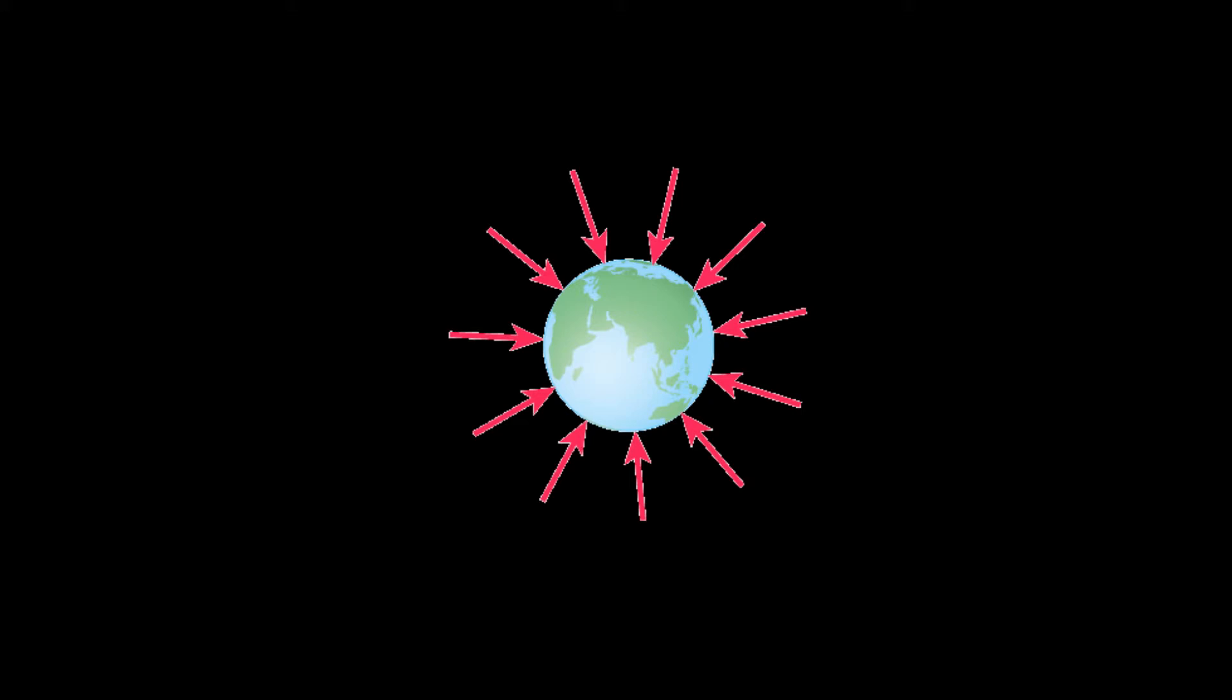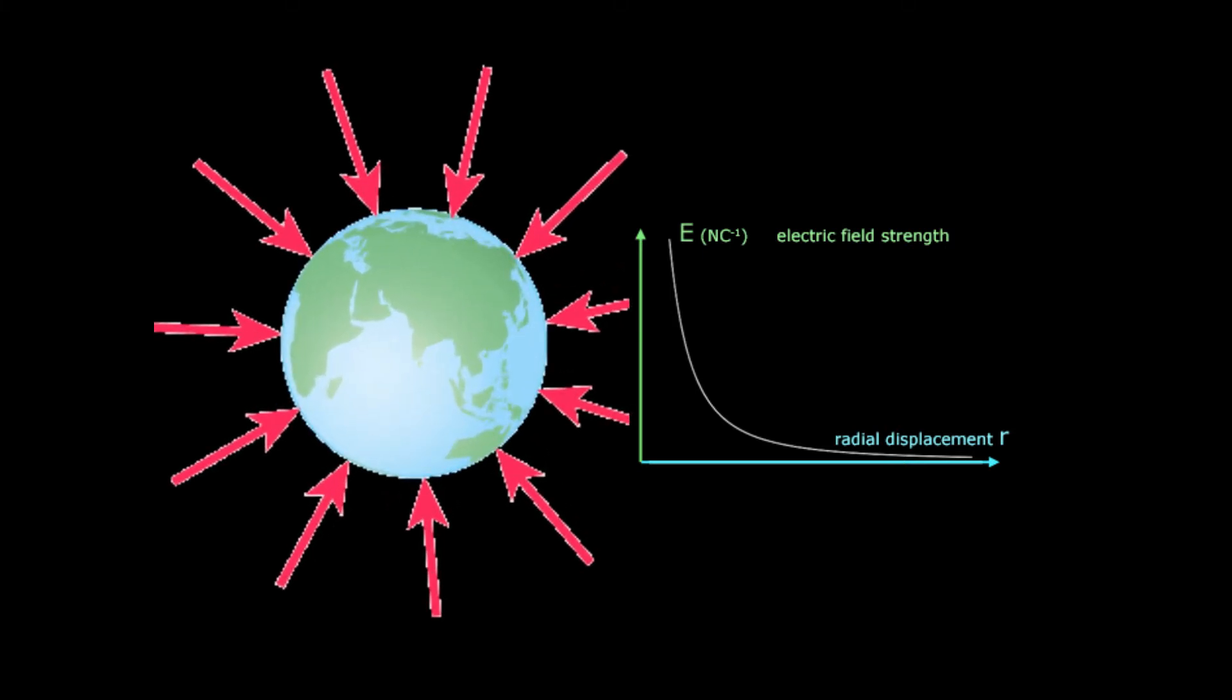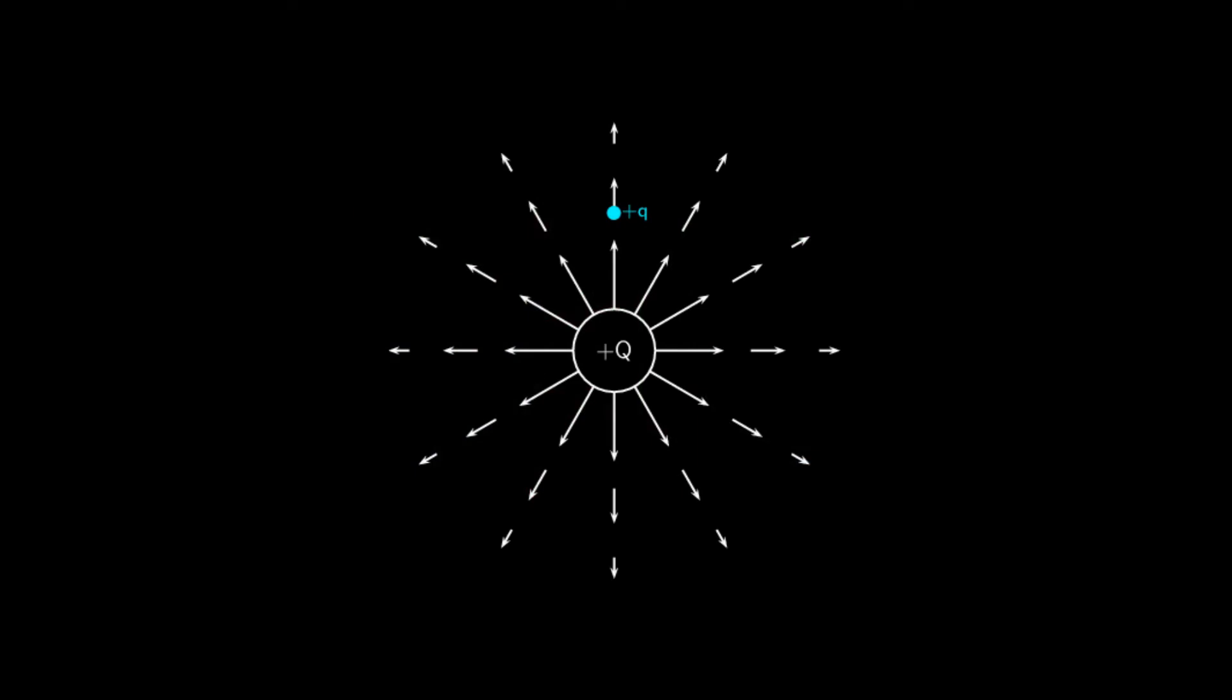So just like the earth's gravitational field, the strength of an electric field varies with distance. As distance increases, the strength of the electric field decreases. The farther away you get from the earth, the weaker its pull. Also, if you increase the mass of the earth it would have a greater gravitational field. Similarly, if you increase the size of the charge producing an electric field, the strength of that electric field would also increase.